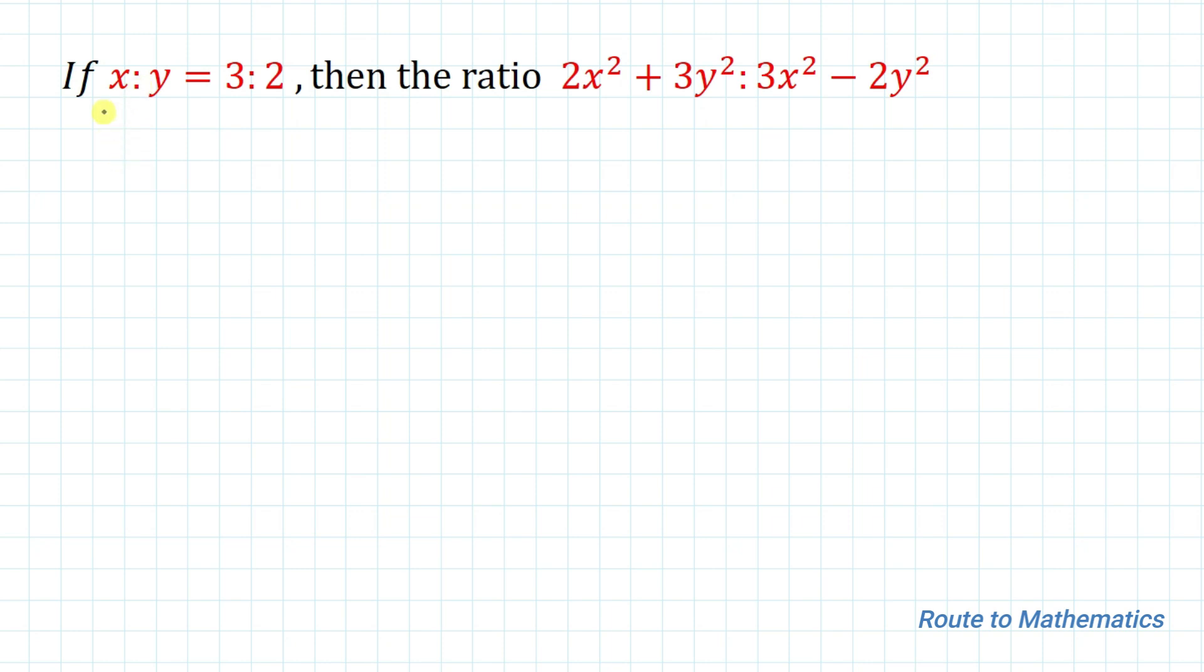So the given question is, if x is to y equals to 3 is to 2, then the ratio of 2x square plus 3y square is to 3x square minus 2y square equals to how much? So we are asked to find out the value of this expression.